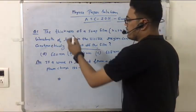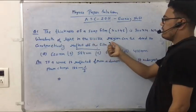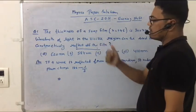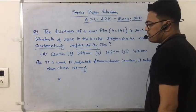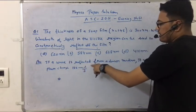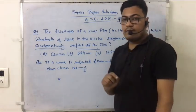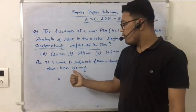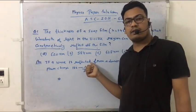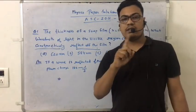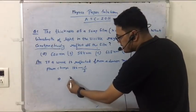First of all, the thickness of a soap film is 300 nm. What wavelength of light in the visible region can be used to constructively reflect off the film? Friends, one thing: I have written a wave from a denser medium. If a wave is reflected from a denser medium, then the phase will change by 180 degrees. And if it's 180 degrees, then the path difference is lambda by 2. How do we do the question? It's a simple formula.